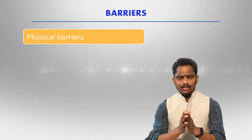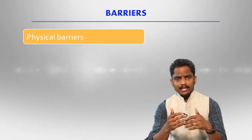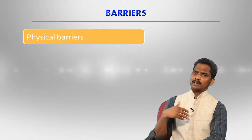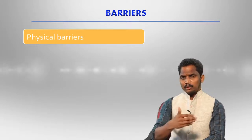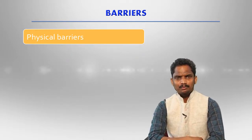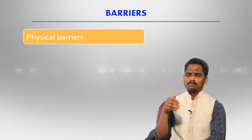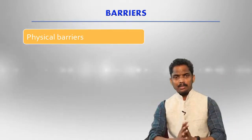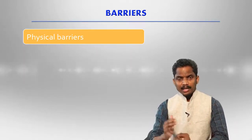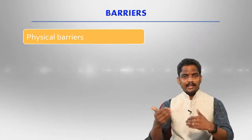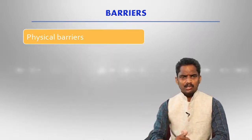We will see some of the barriers which usually play a role in communication, making it ineffective. One is the physical barrier. For example, if I am giving a lecture in a classroom where 100 or 200 students are sitting and the classroom is very lengthy, students sitting at the back may not hear me because the distance is too much. If the classroom is very big, it is going to be difficult. So physical distance creates a barrier — physical barriers are one type.